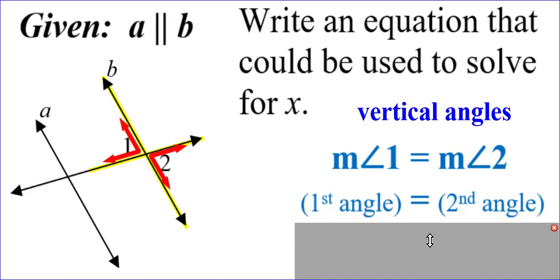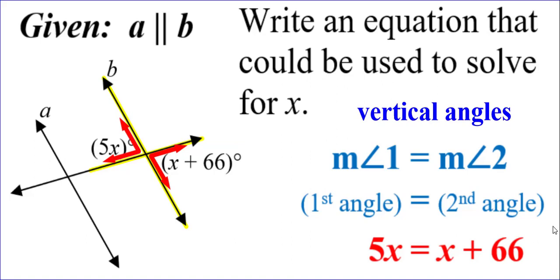So the first angle was equal to the second angle. Remember, that first angle was originally called 5x. That second angle was originally called x plus 66. So we're just going to set them equal to each other to get our equation.